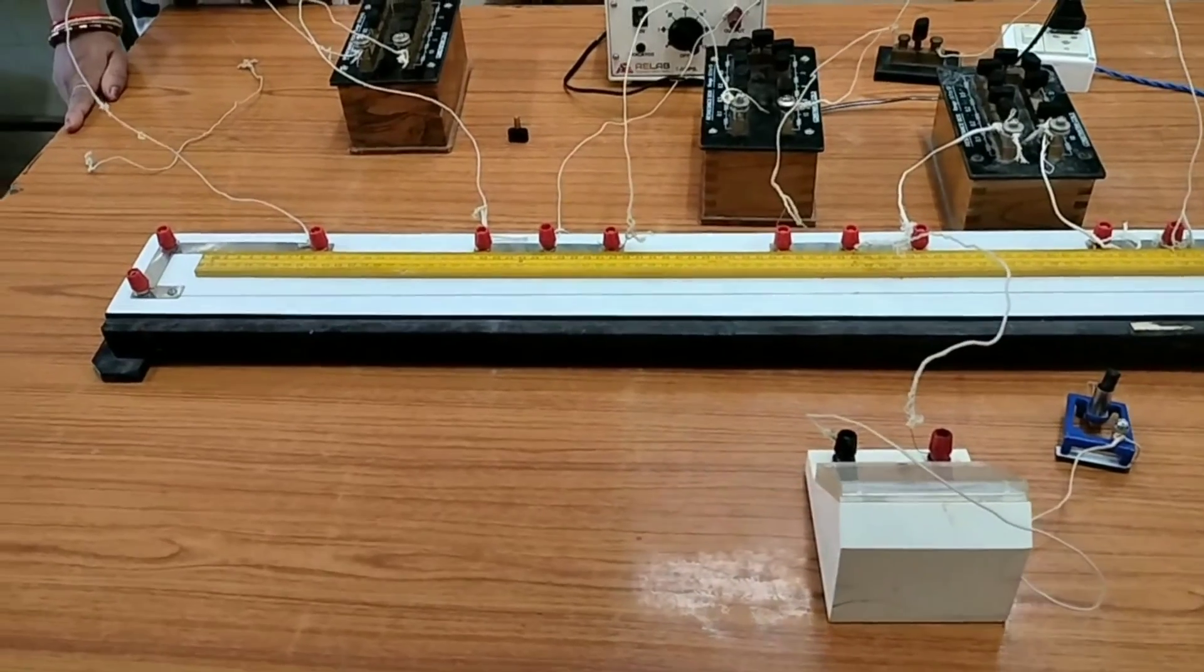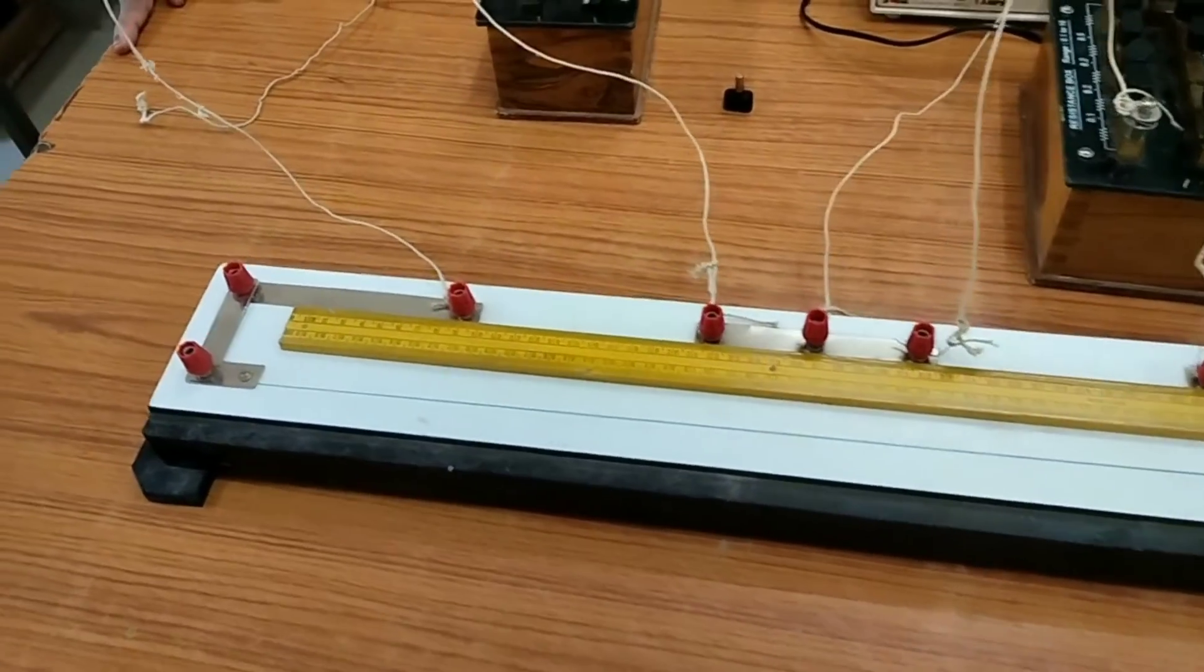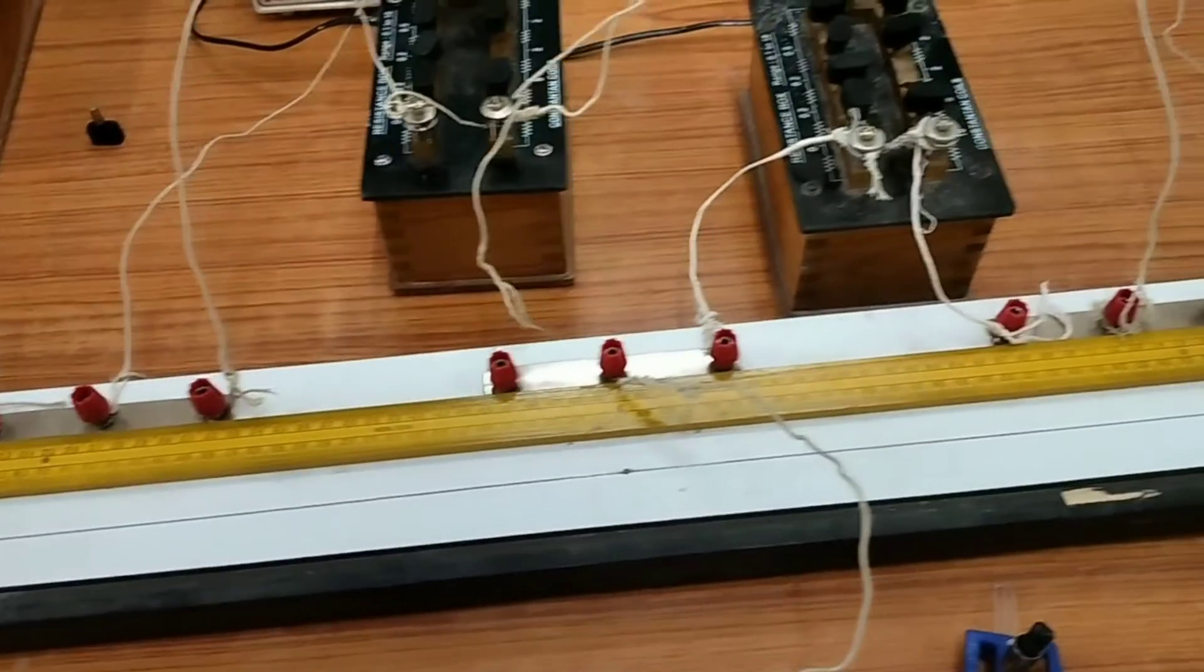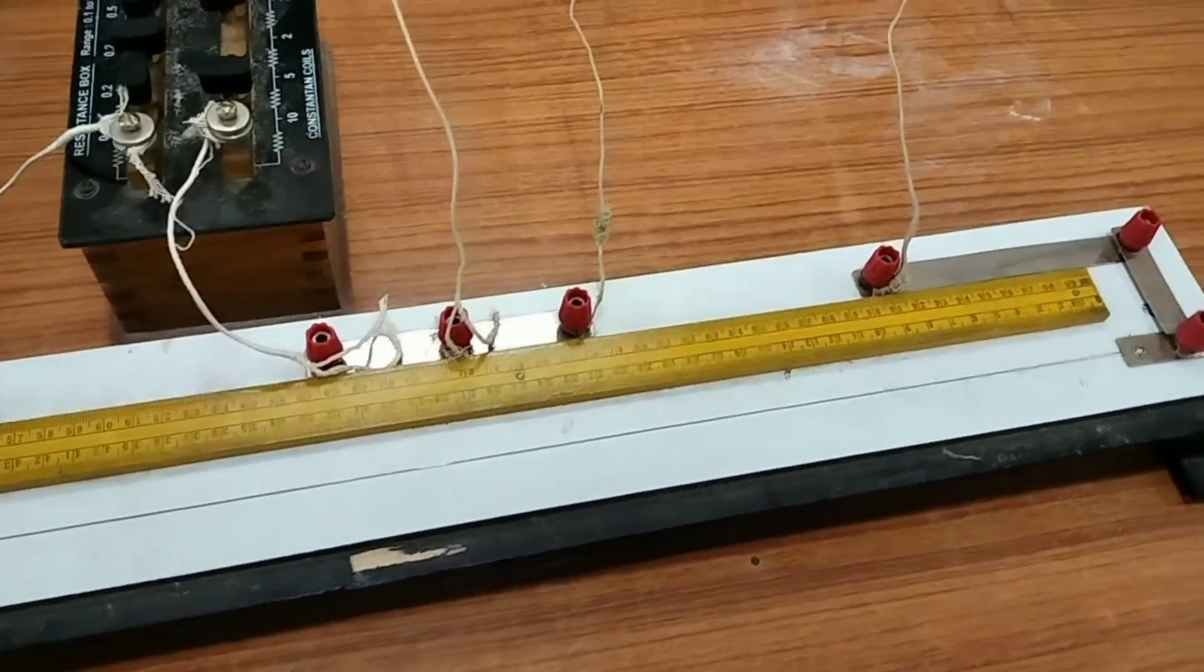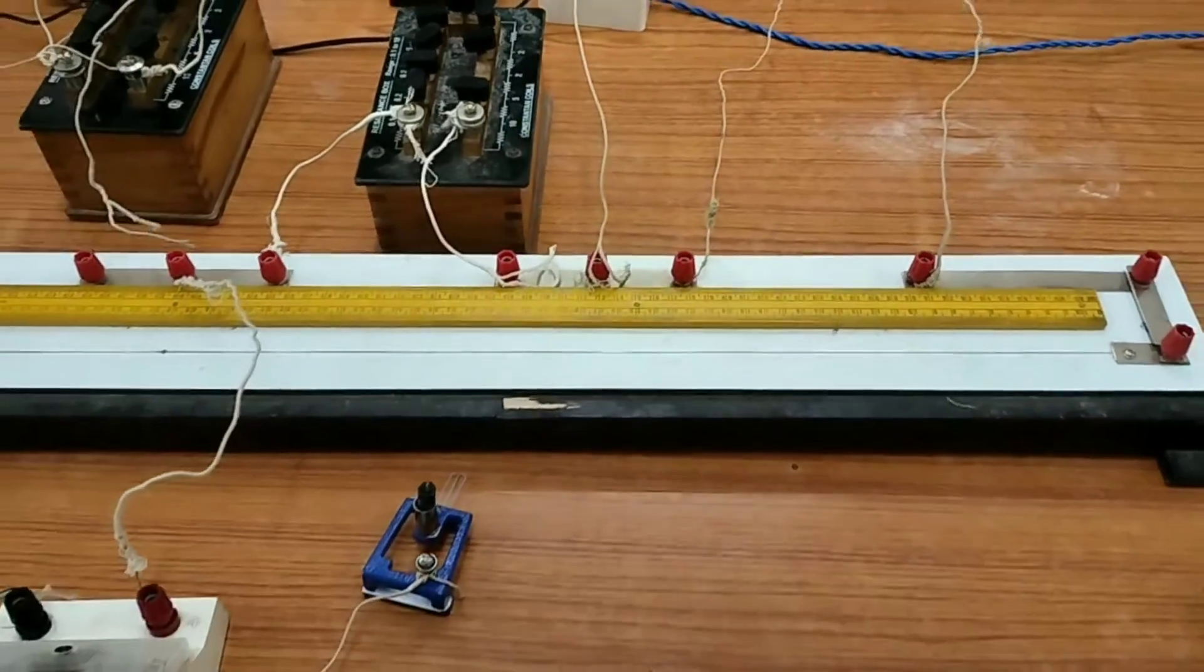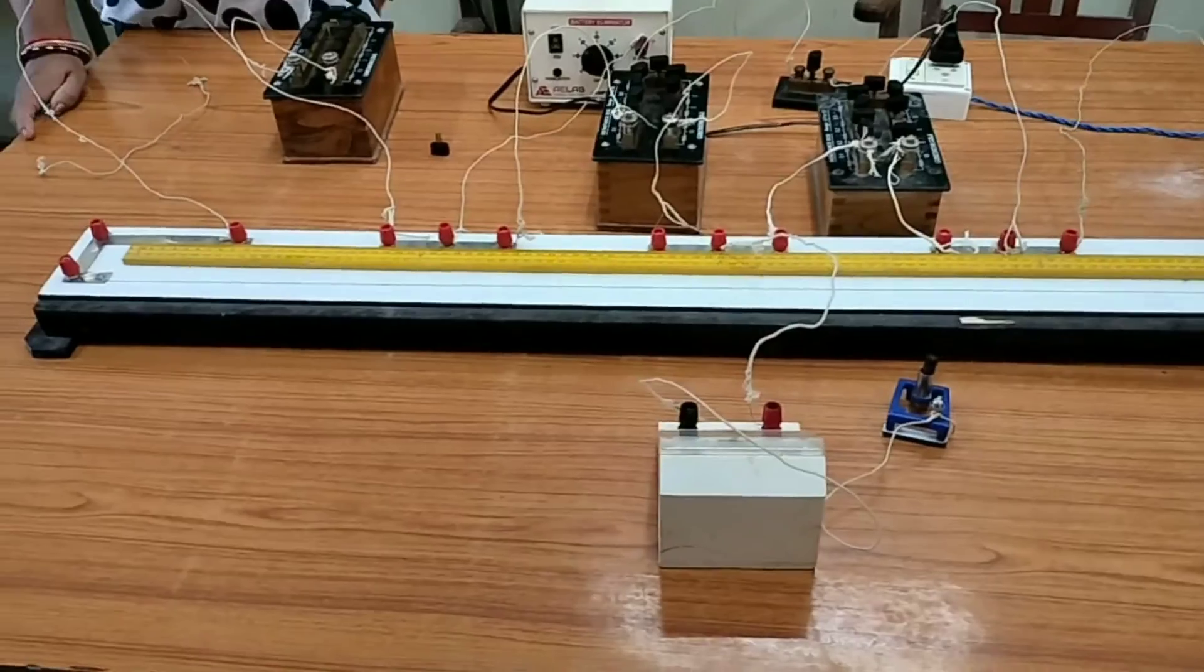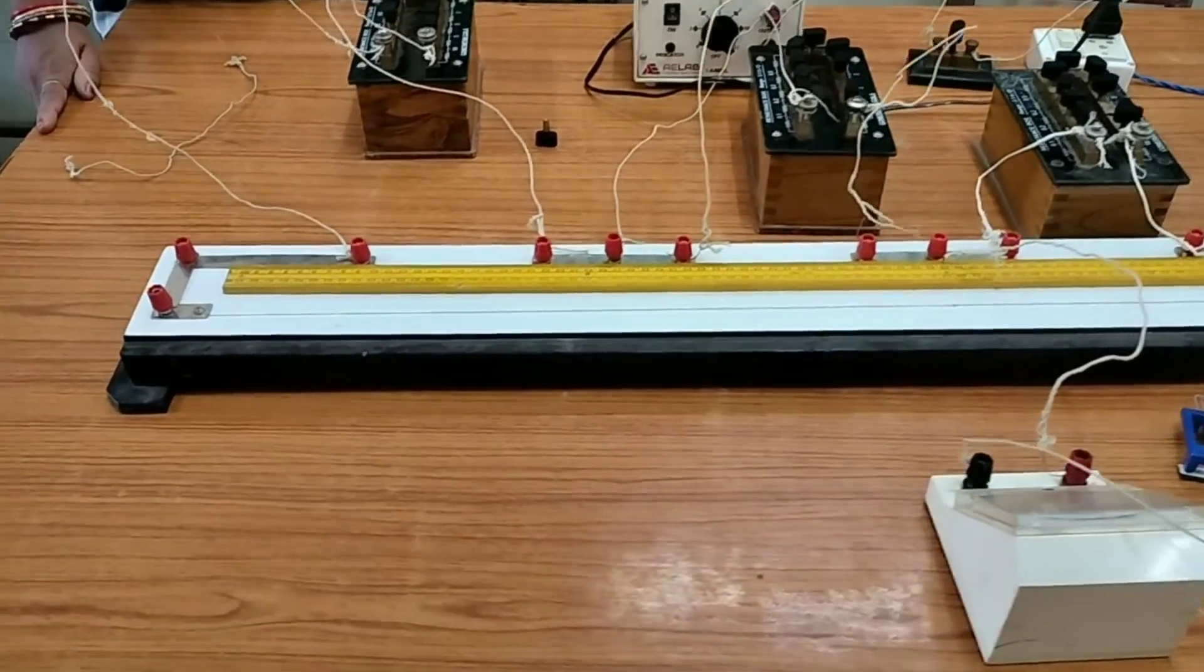And by same procedure, if you interchange the two experimental wires - here I have taken one experimental wire and another fractional resistance, but you can take two experimental wires - and if you interchange it you follow the same procedure to calculate L2. And how you calculate L1 and L2, I have discussed it in my previous video. Thank you.